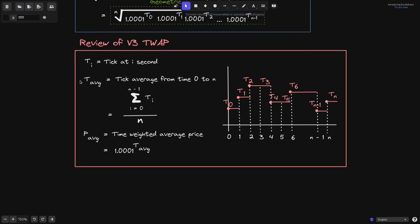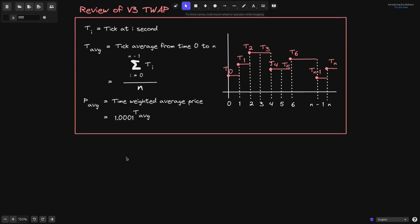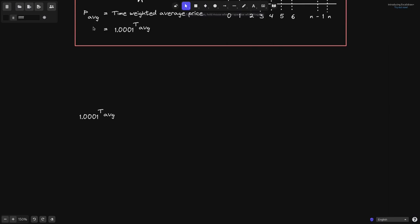So this is how you compute the tick average and the price average. Let's now take a look at how this price average is the geometric mean. We will start off with the price average, which is equal to 1.0001 raised to the average tick — that is, the summation of ticks divided by the duration.